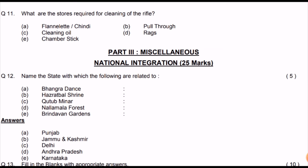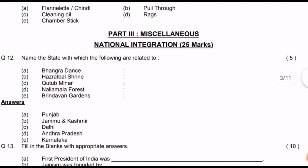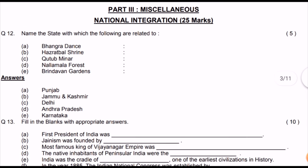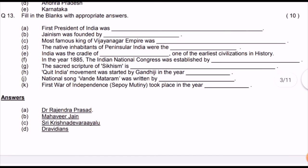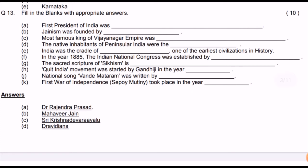Part three: Miscellaneous — National Integration, 25 marks. Name the states related to the following: Bhangra dance — Punjab; Hazratbal Shrine — Jammu and Kashmir; Qutub Minar — Delhi; Nalamala Fort — Andhra Pradesh; Brindavan Gardens — Karnataka. Fill in the blanks: first President of India was Dr. Rajendra Prasad.